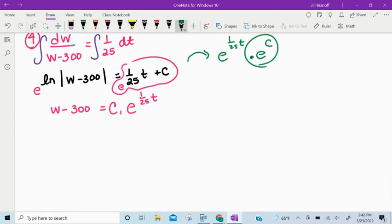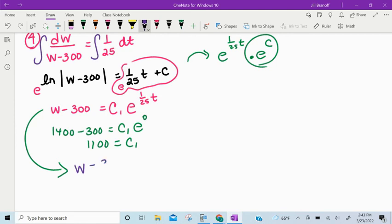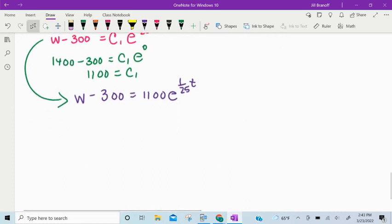This is where I would find my c. So we know w is 1,400. So 1,400 minus 300 equals c sub 1 times e to the 0. So c sub 1 is 1,100. Revert back to there. And we can say w minus 300 equals 1,100 times e to the 1 25th t. And then finally just add the 300. W is equal to 1,100 e to the 1 25th t plus 300.